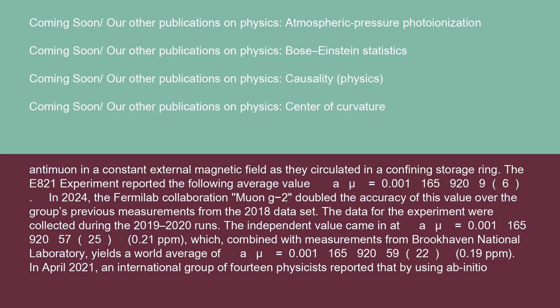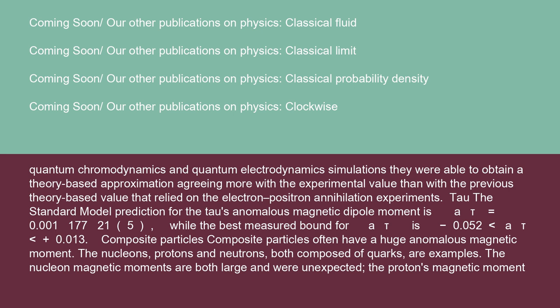In April 2021, an international group of 170 physicists reported that by using ab initio quantum chromodynamics and quantum electrodynamics simulations, they were able to obtain a theory-based approximation agreeing more with the experimental value than with the previous theory-based value that relied on the electron-positron annihilation experiments.